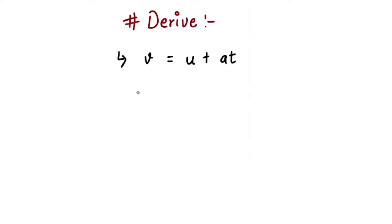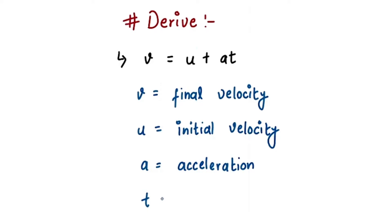This is pretty simple. Our v over here is our final velocity, our u is initial velocity, our a is acceleration, and our t is time.